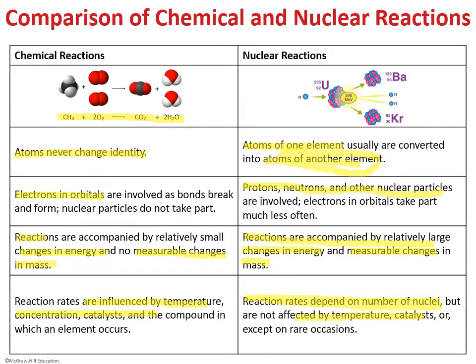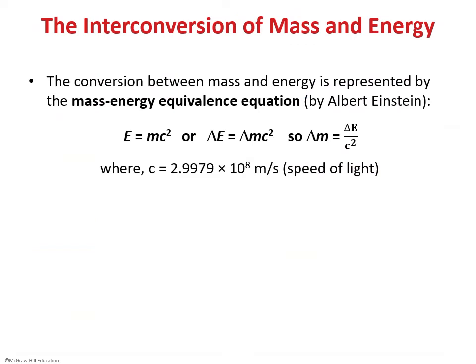Every conversion of mass is accompanied by a conversion of energy. This relationship is given by Einstein's mass-energy equivalence equation: E = mc², where E is energy, m is mass, and c is the speed of light in vacuum. It can also be written as ΔE = Δm·c², where ΔE is the change in energy during a nuclear reaction and Δm is the change in mass. Since c is a constant, if we know either the energy difference or the mass difference, we can calculate the other.